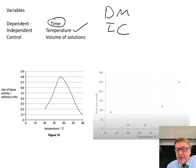You'll get two graphs. The first graph is rate of lipase activity versus temperature. You can see the optimum point is probably around 37 degrees Celsius, which is body temperature.